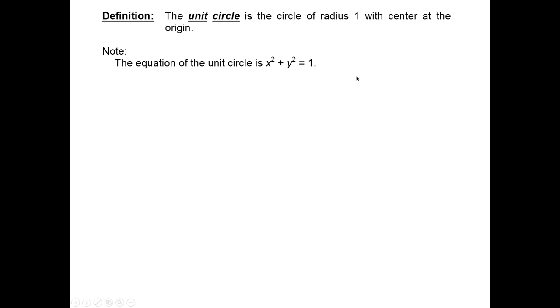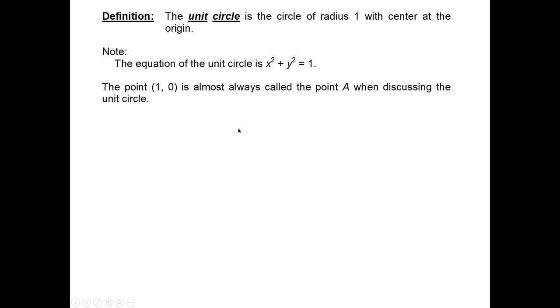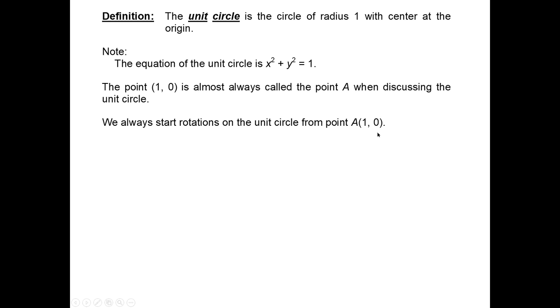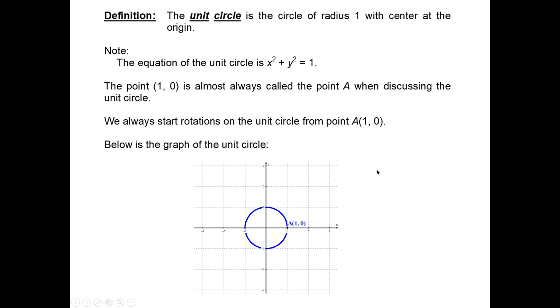For any circle centered at the origin with radius r, the equation is x squared plus y squared equals r squared. Since r equals one here, the equation of the unit circle is x squared plus y squared equals one. The point (1, 0) is almost always called point A when discussing the unit circle. We always start rotations on the unit circle from point A at coordinates (1, 0), which is on the positive x-axis.